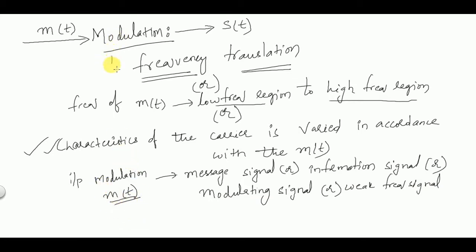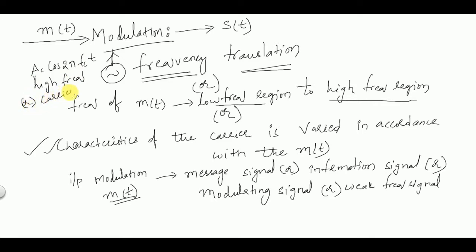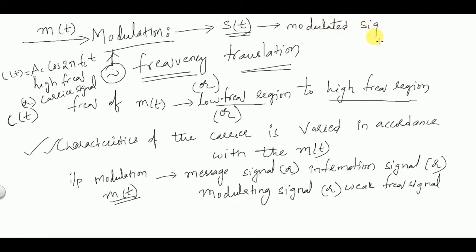For performing the process of modulation, we use a high frequency signal called the carrier signal: c(t) = Ac·cos(2πfc·t), where Ac represents the amplitude of the carrier and fc represents the frequency of the carrier. By combining the message signal and carrier signal, we produce s(t), which is called the modulated signal — the output of the modulation process.